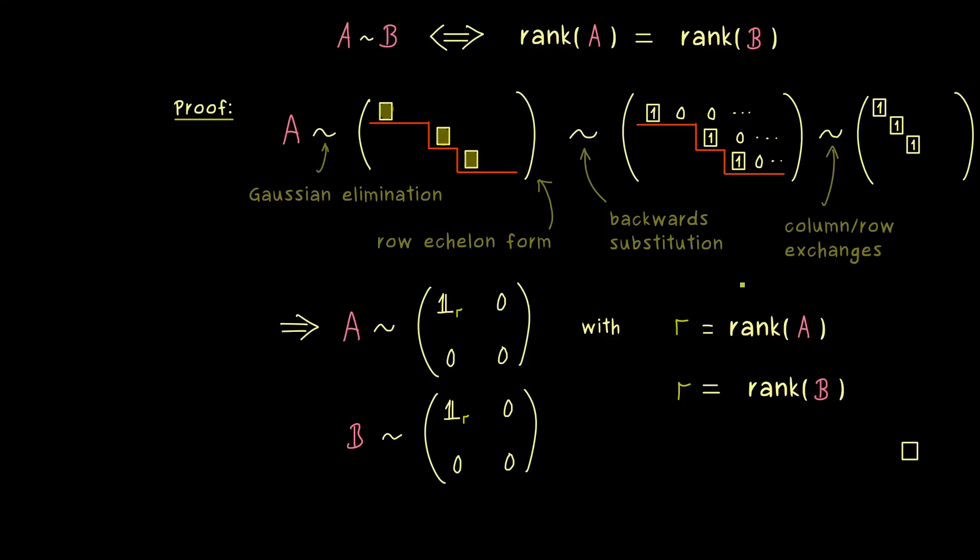So please remember, if the rank is different, the two matrices cannot be equivalent. And now please note, this also implies that the rank of a general linear map can be calculated by using a matrix representation. So you see, it does not matter which matrix representation we choose, because all of them have the same rank.